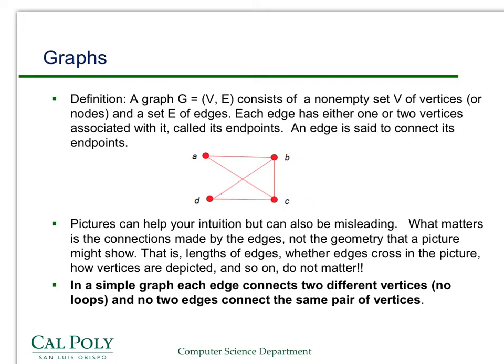Most of the graphs that we'll talk about will be simple graphs. That is, each edge connects two different vertices. You won't get another edge from B to C besides this edge, and you won't get loops.